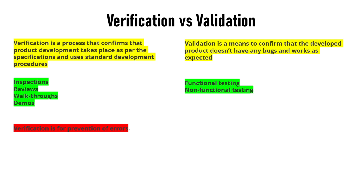Verification is meant to prevent errors — for example, if I write a plus b equals c, I need to verify whether a plus b truly equals c. So verification is about reducing errors through prevention, whereas validation is about the detection of errors.